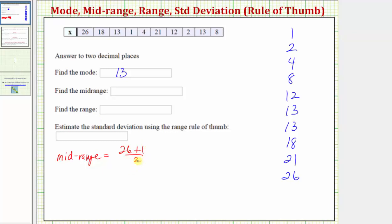Again we're finding the mean or average of the greatest value and least value. So we have 27 divided by 2 which equals 13.5. The midrange is 13.5.